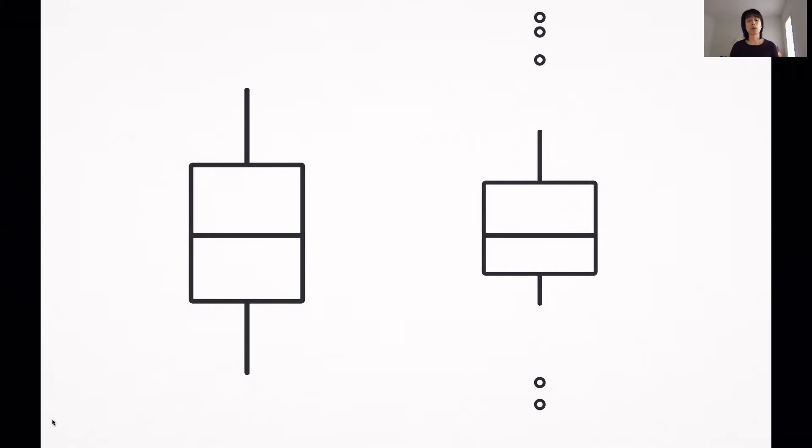Sometimes you'll see box and whisker plots that have some points above or below the whiskers. This happens when you have values that lie outside 1.5 times the interquartile range from either end of the box. These points can be considered outliers. Box and whisker plots can be used to get a sense of the distribution of your data, though nowadays there are other richer ways to visualize distributions, such as histograms, density plots, violin plots, and bean plots.